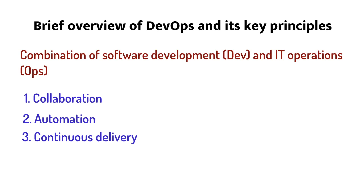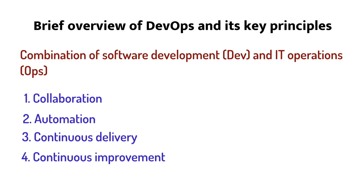By automating repetitive tasks, DevOps can reduce errors and free up time for more strategic work. Continuous delivery: DevOps aims to enable teams to deliver software continuously through a process of continuous integration, continuous testing, and continuous deployment. This approach helps teams get feedback quickly, reduce time to market, and improve the overall quality of the software.